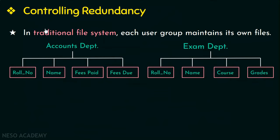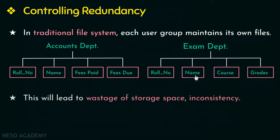In the traditional approach, much of the data will be repeated — like student details being repeated twice. This duplication, also called redundancy, leads to wastage of storage space and data inconsistency. Data inconsistency occurs when an update is applied to some files and not others. For example, if the accounts department updates a student name but the exam department does not, that causes inconsistency.